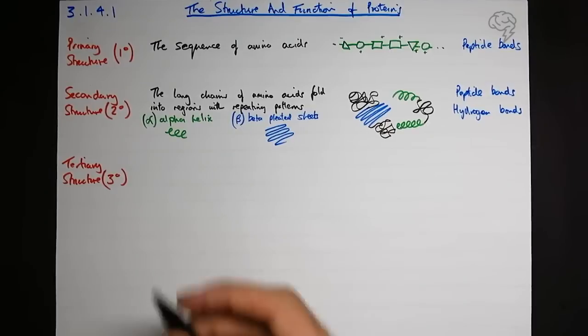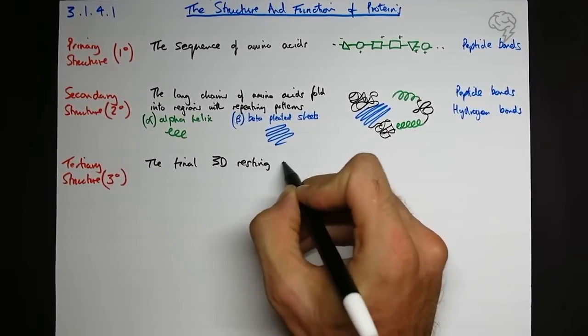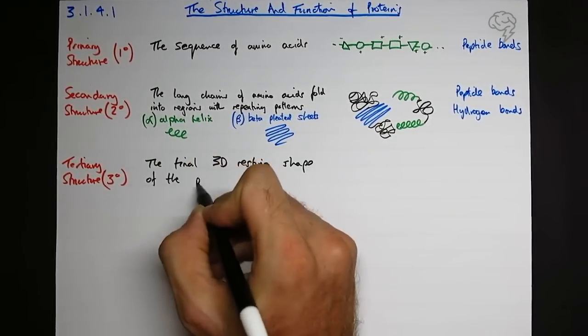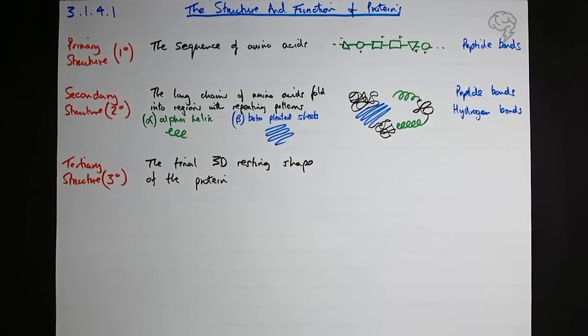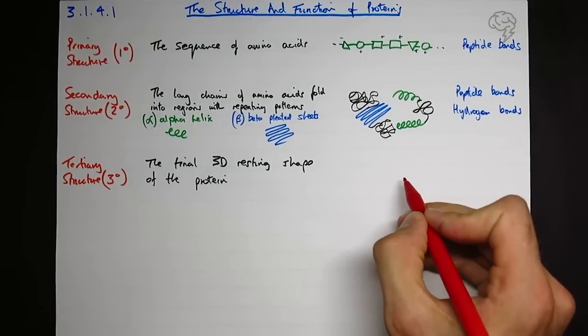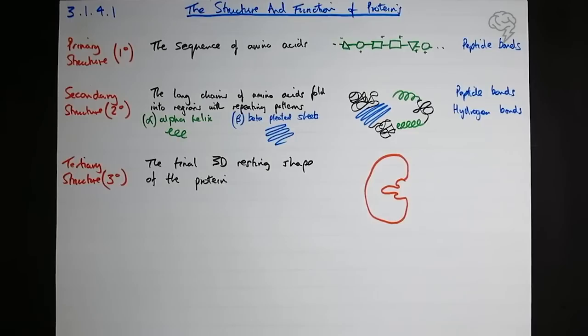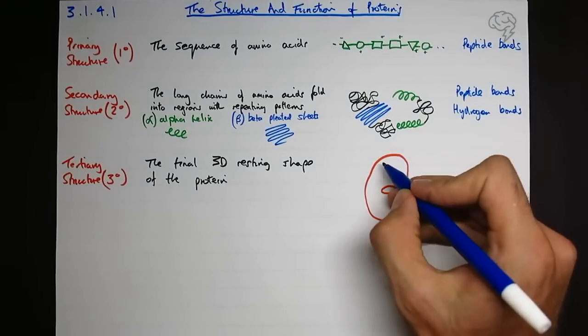How can we define that? Well, it's the final 3D resting shape of the polypeptide chain or the protein. So I'm going to represent that in red. So the final shape might be an enzyme - we're going to maybe I'll keep my active site - and that's going to be the resting shape.